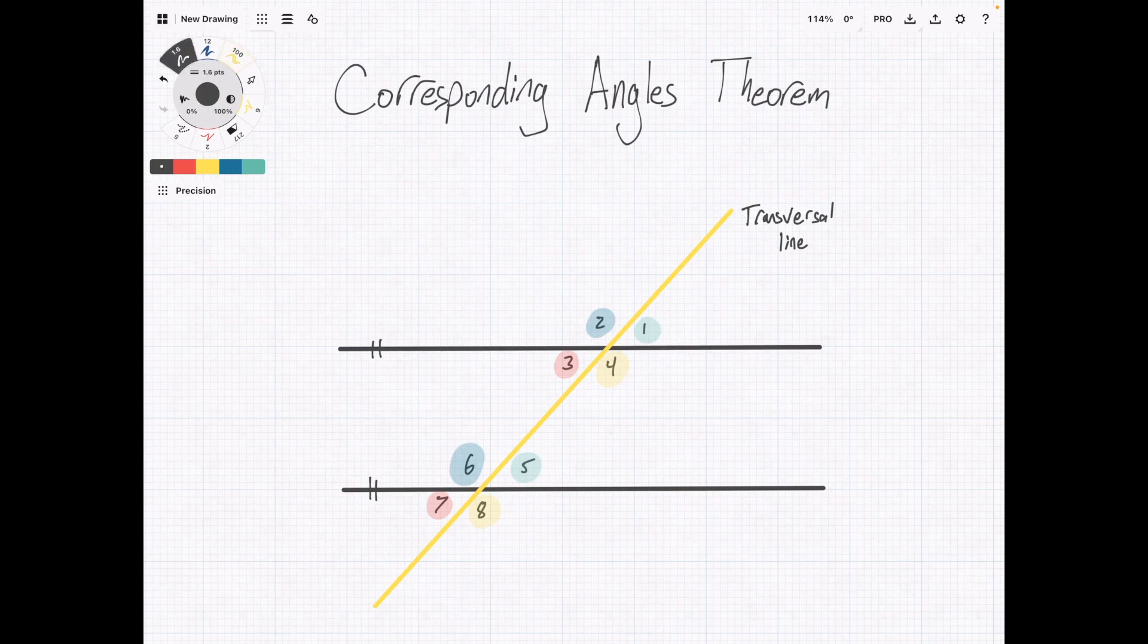The way that I like to think about this is the corresponding angles theorem starts with parallel lines. So, you're given that the lines are parallel. Then, you can infer something about the angles. In this case, that angles in corresponding locations are congruent. So, this is how I like to visualize it.